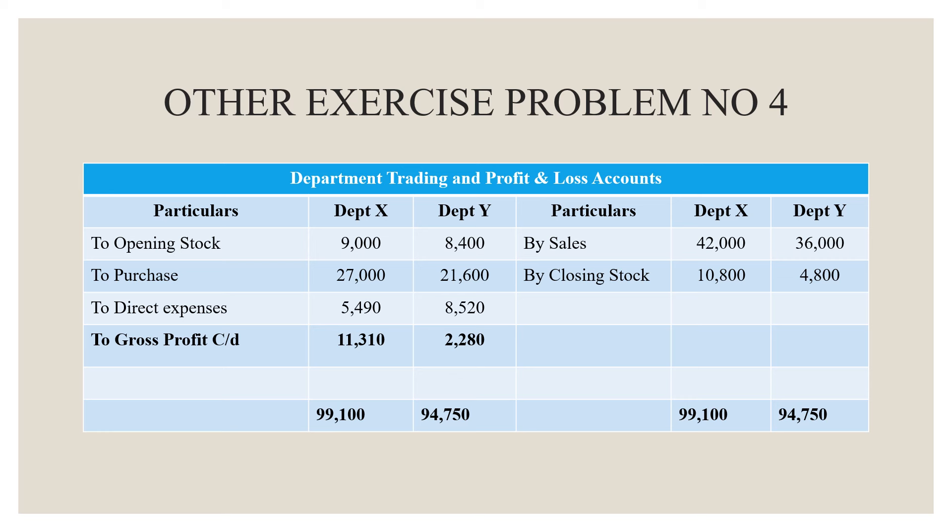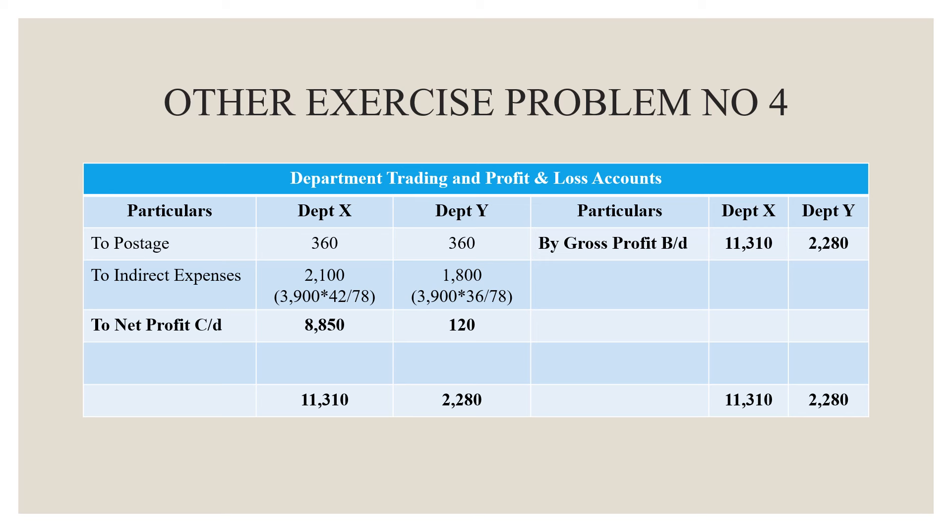In this slide, we are preparing the Profit and Loss Account. Gross profit has been brought down on the credit side: 11,310 for Department X and 2,280 for Department Y. On the debit side, there are two expenses: postage and indirect expenses. Postage has already been split in the question — 360 rupees for each department. Indirect expenses are given as a combined total of 3,900 rupees.